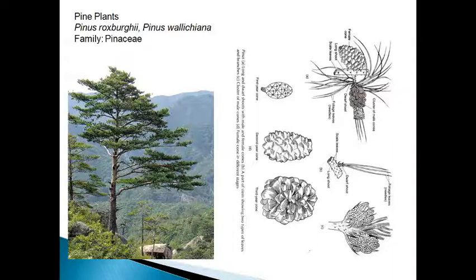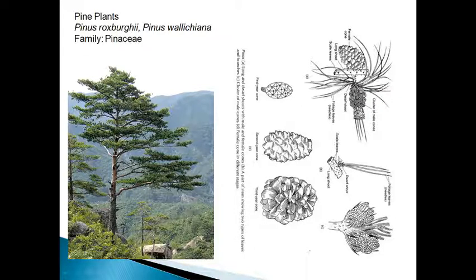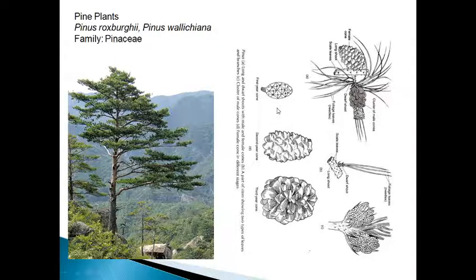The Pine tree shows leaf dimorphism — there are two types of leaves: one is needle-shaped foliage leaves, and another is scale leaves. It shows a special type of cone, one for male and another for female. This is the male cone, which is much more compact. These are the female cones — first year, second year, and third year.